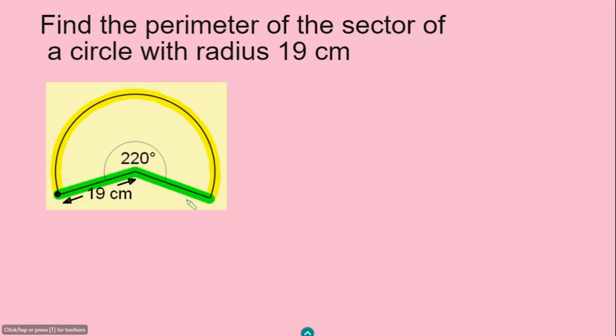Here we have to find the perimeter of the sector of a circle with radius 19 centimeters. Now we know the perimeter of a sector consists of two radii and a curved section here which represents the arc length. So first we need to find the arc length, then the radius, and sum them up. That gives us the perimeter.